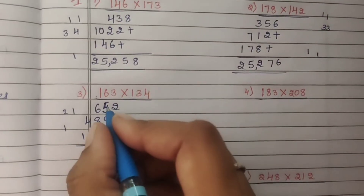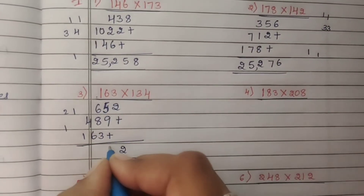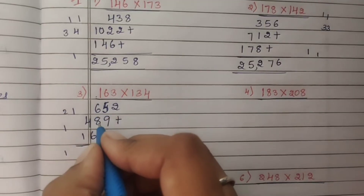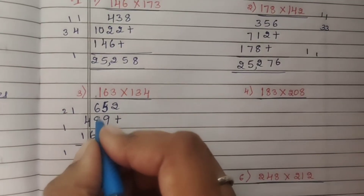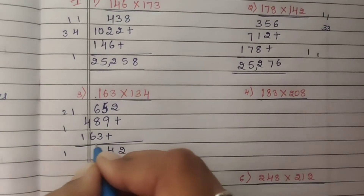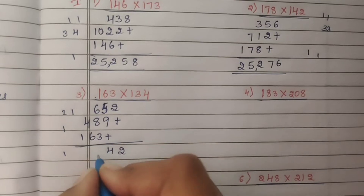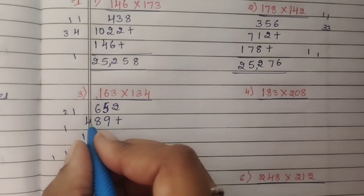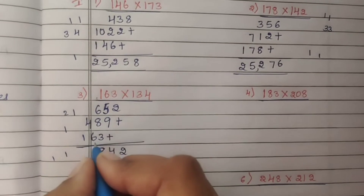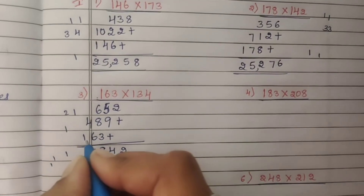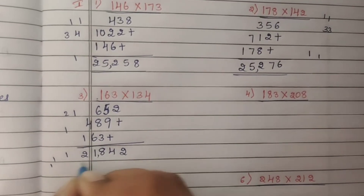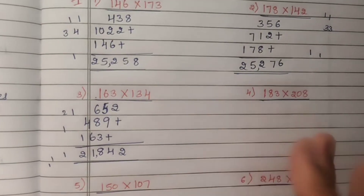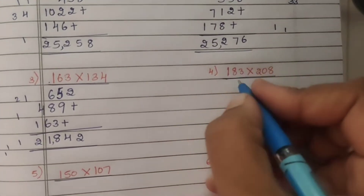Adding the partial products: 4 ones are 4. 4 plus 1 is 5, 3 plus 2 is 5, carry. Answer: 21,842.